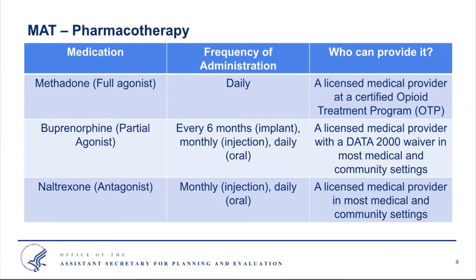Buprenorphine is a partial agonist, meaning it occupies less of the receptor and achieves similar clinical effects as methadone but with a better safety profile. It has a ceiling effect, and negative effects such as risk for respiratory depression plateau even with increasing dose. Buprenorphine is more widely available, comes in a daily oral version, and now has a formulation for long-acting doses via injection or implant. Physicians, nurse practitioners, and physician assistants with a federal waiver can prescribe it from community-based settings, and any pharmacy can fill the prescription.